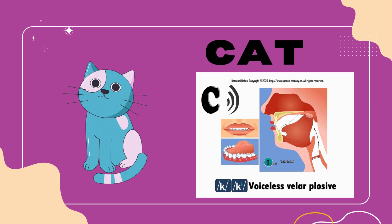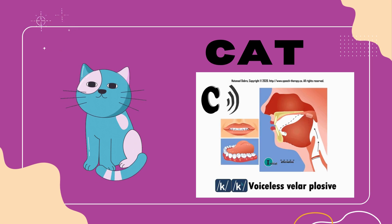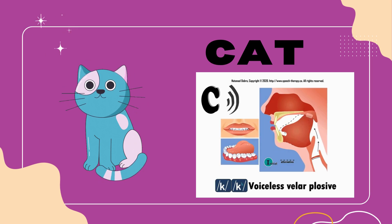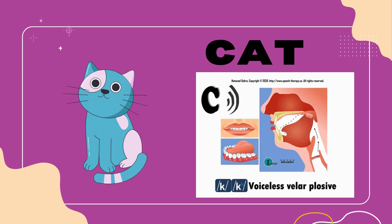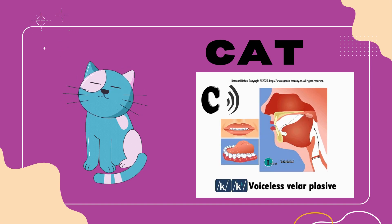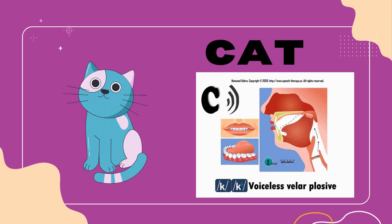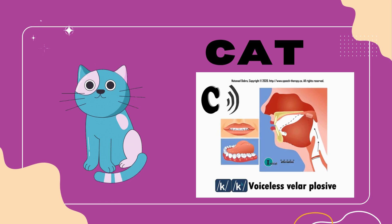Cat features the letter C, which in this case represents the voiceless velar plosive sound K. When pronouncing cat, we block the airflow at the back of the mouth using the tongue, then release it abruptly.